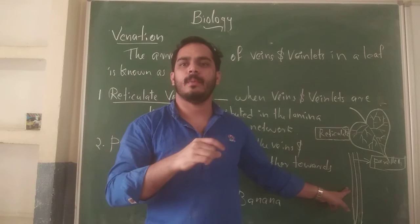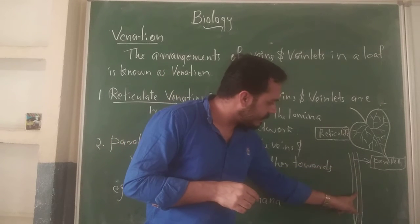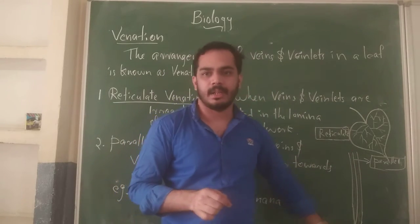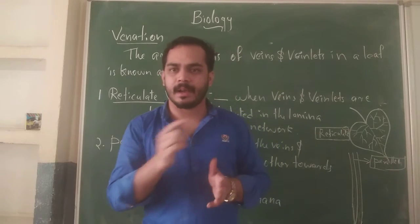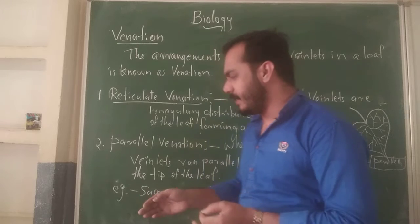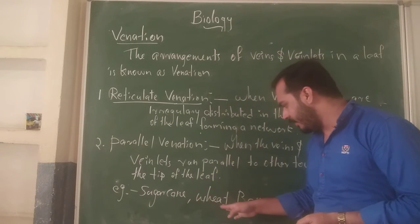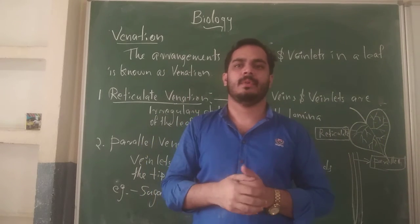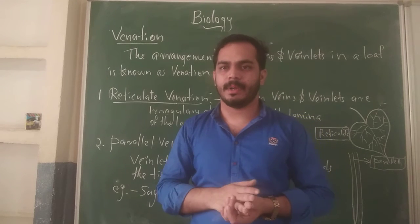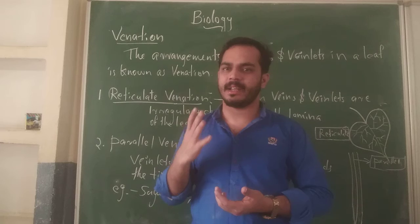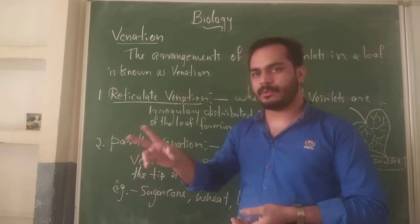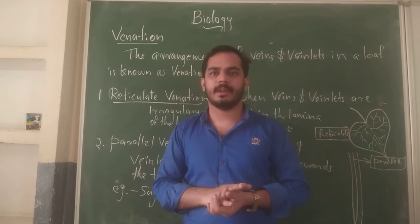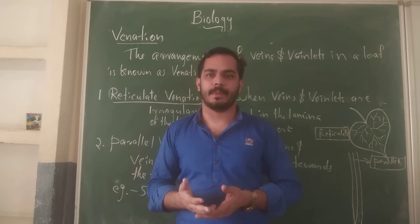The second leaf is narrow, and you can see the veins run parallel towards the tip of the leaf — this is called parallel Venation. Some examples are sugarcane leaf, wheat leaf, and banana leaf, where the veins run parallel. I hope all of you understood today's topic — Venation means the arrangement of veins and veinlets, with the two types being reticulate and parallel. We will continue in the next class with another topic. Thank you.